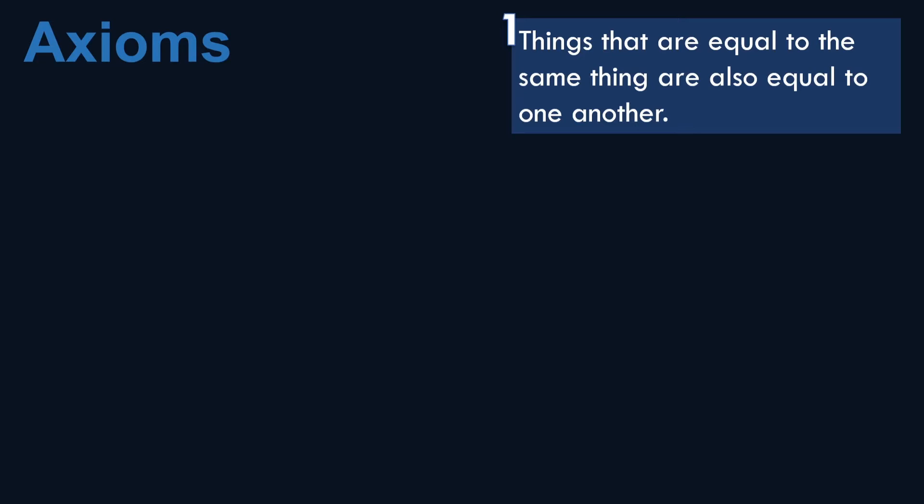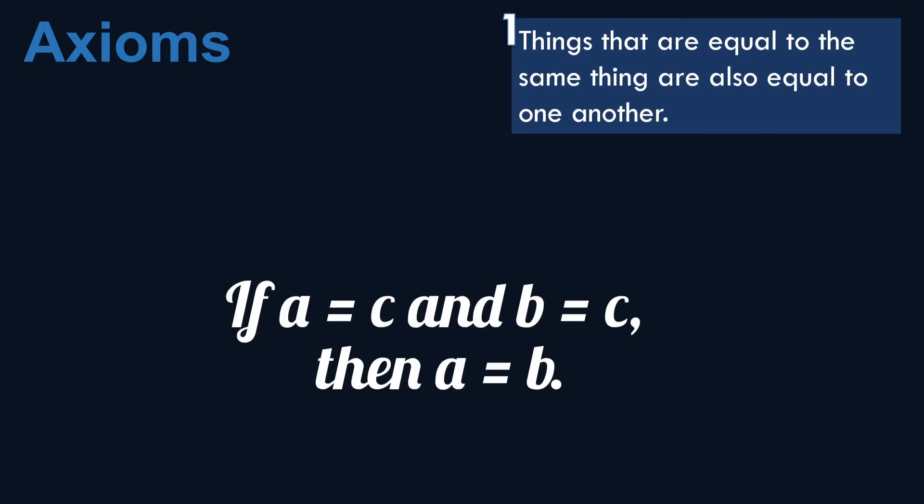This sounds like a transitive property. For example, if A is equal to C and C is also equal to B, then A equals B.